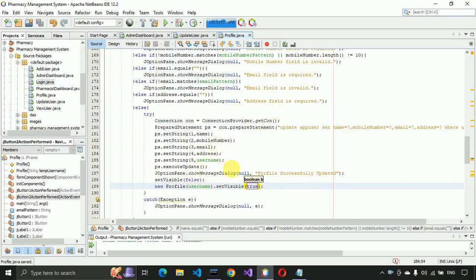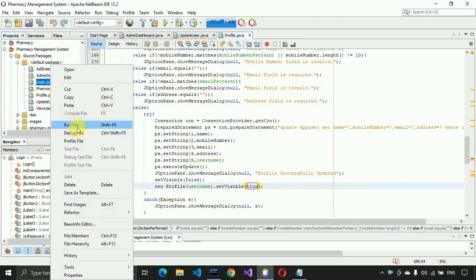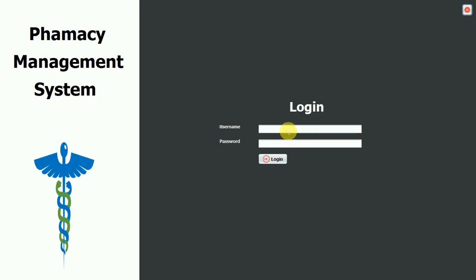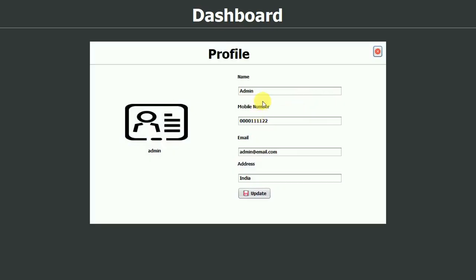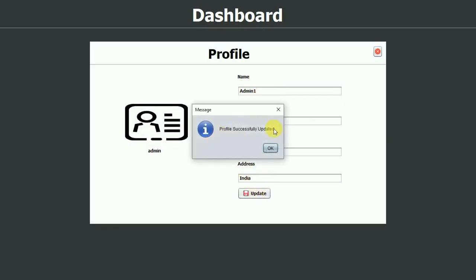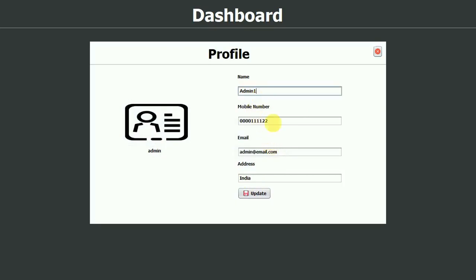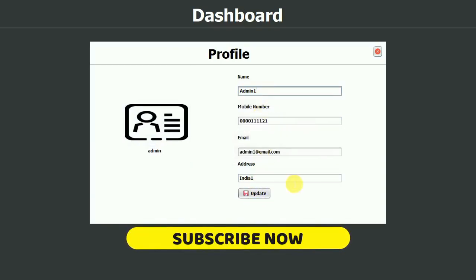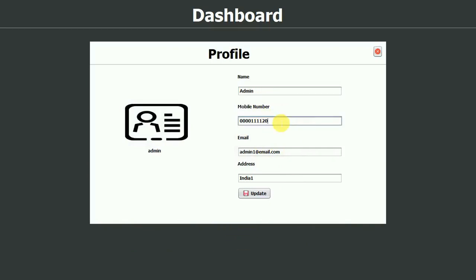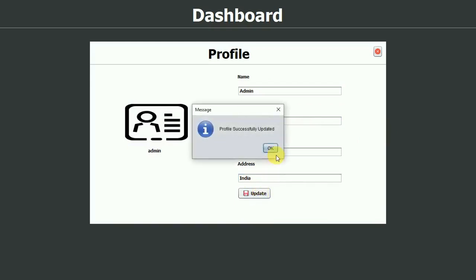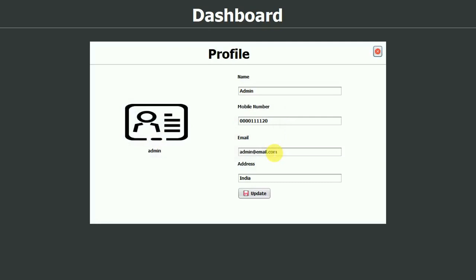The coding for the profile update is now complete. Let's test it: run the file, log in with admin credentials, click on Profile, change the name, and click Update. 'Profile updated successfully' — click OK and you can see the data is updated and the changes are visible. Our profile part is working as expected. I hope you guys like this video — please click Like and subscribe to my channel, thank you so much.